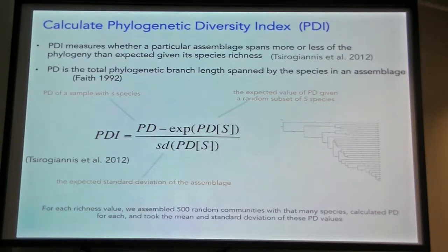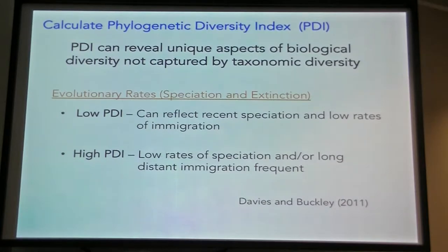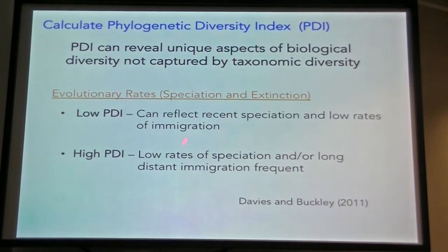There's a null model associated with this, and PDI is then divided by the expected standard deviation of the assemblage. For each grid cell we calculated this approximately 500 times to estimate variation in PDI — influenced by the work of Davies and Buckley — to recreate something similar for plants. In general, low PDI can reflect recent speciation rates as well as low rates of immigration, while high PDI can reflect low rates of speciation and/or long-distance immigration.